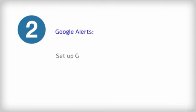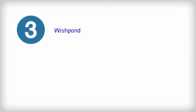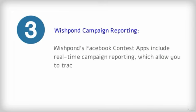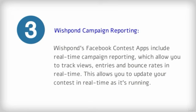Number two: Google Alerts. Set up Google Alerts to monitor mentions of your contest across the entire web. Number three: Wishpond campaign reporting. Wishpond's Facebook contest apps include real-time campaign reporting, which allows you to track views, entries, and bounce rates in real-time. This allows you to update your contest in real-time as it's running.